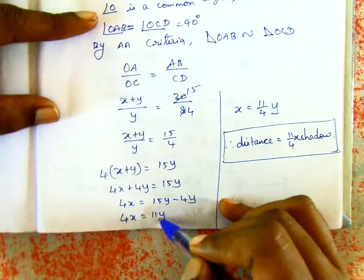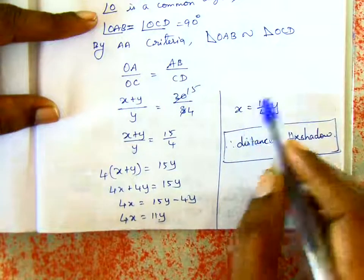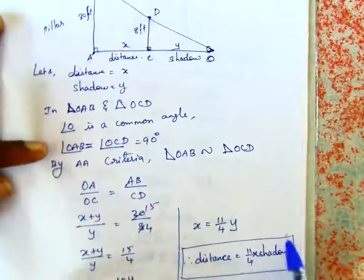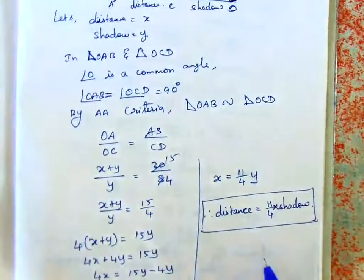So if x equals 11/4 times y, therefore the relation is: distance equals 11/4 times shadow. So this is the relation.